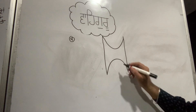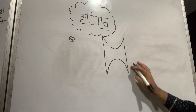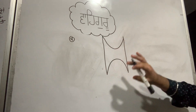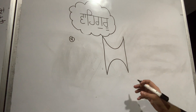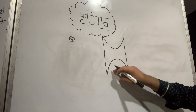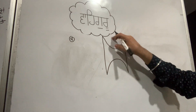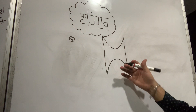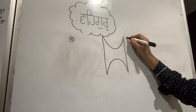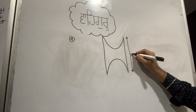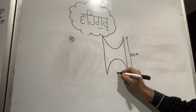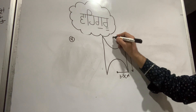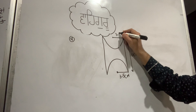Now the next problem: a hemisphere is scooped out from each end of a solid cylinder, as shown in the figure. The height of the cylinder is 10 cm and the radius of the base is 3.5 cm.